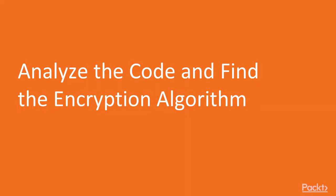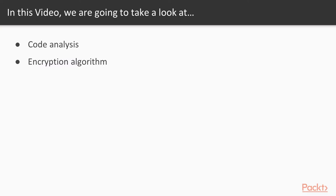In this video we are going to analyze the code and find the encryption algorithm. We will learn about code analysis and then about what kind of encryption algorithm the application is using. To perform this task, first we need to decompile the JAR file, then analyze the code, and then find out the encryption algorithm inside it.